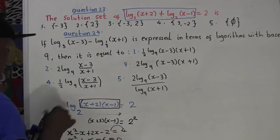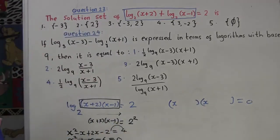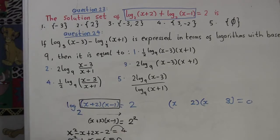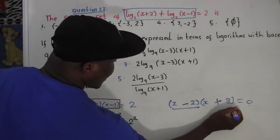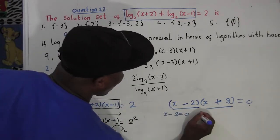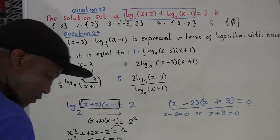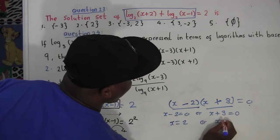Now I can factorize x squared plus x minus 6 equals 0. To get x squared we use x and x. To get 6 we look at factor pairs; we need 2 and 3 since the middle term is x. The bigger number gets the positive sign, so it's (x + 3)(x − 2). Wait — since the middle is positive and product is negative 6, we need negative 2 and positive 3. So (x minus 2)(x plus 3) equals 0, giving x minus 2 equals 0 or x plus 3 equals 0.